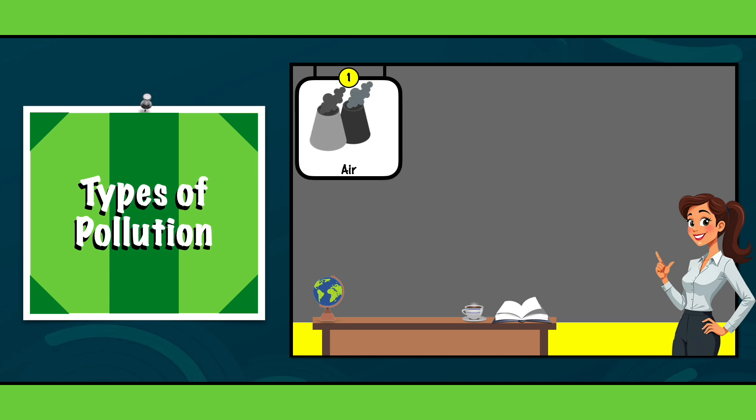Air pollution is a major issue, mainly caused by emissions from vehicles, factories and the burning of fossil fuels. Harmful gases like carbon dioxide, sulfur dioxide and nitrogen oxides are released into the atmosphere and contribute to climate change significantly.